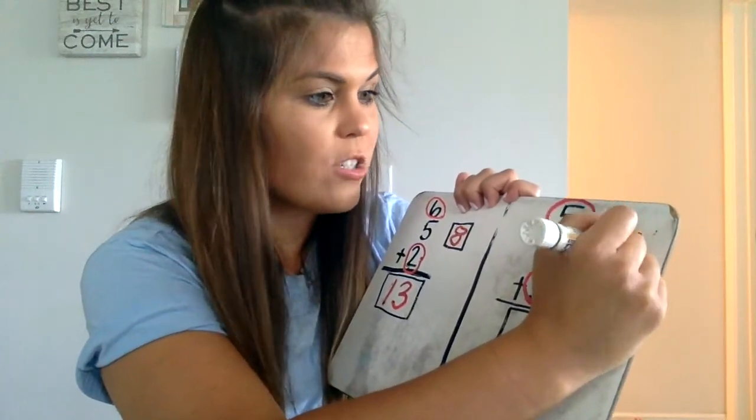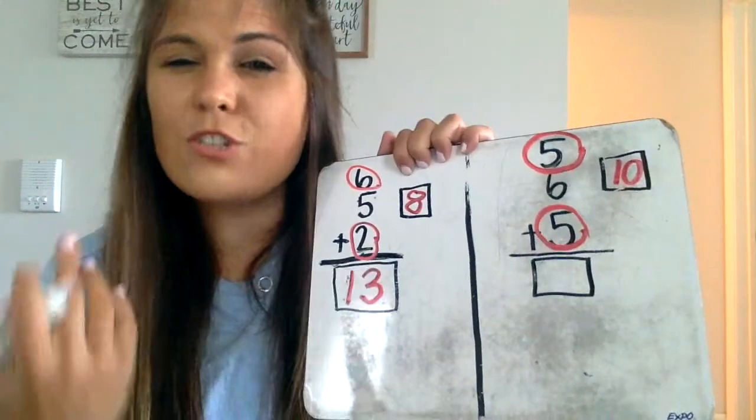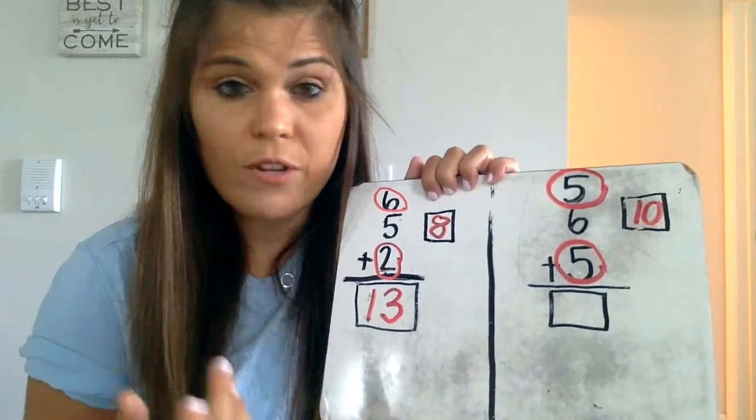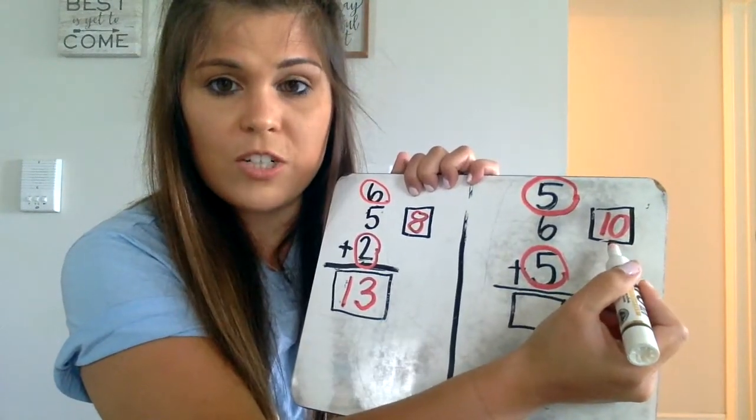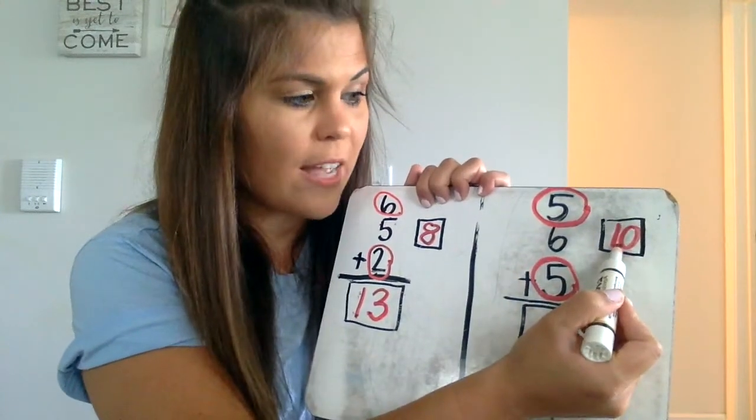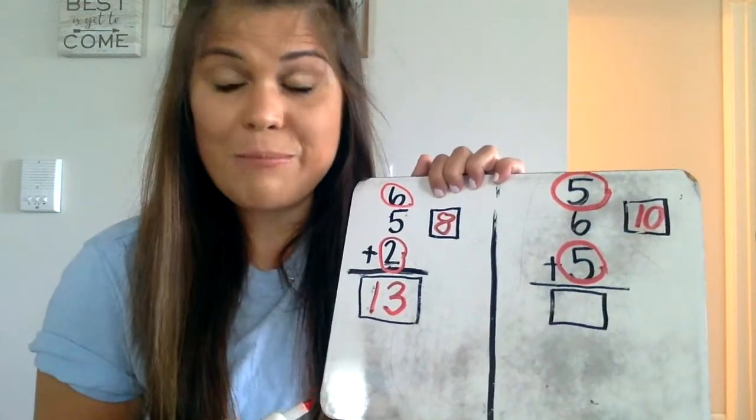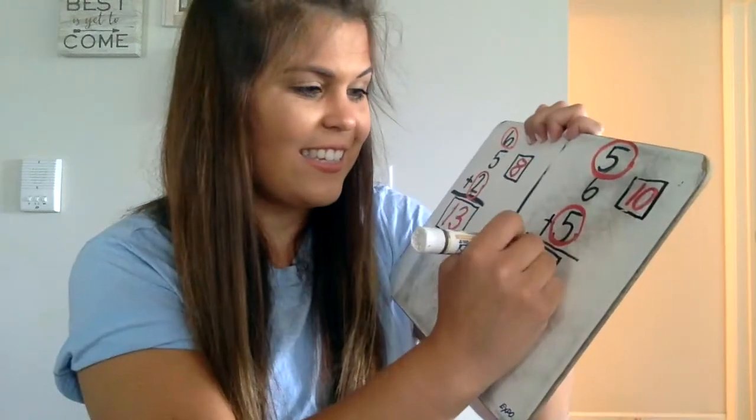...and any equation that has ten as an addend is usually pretty easy to solve. So, five plus five equals ten. I write that answer in the box over here, and now I could do ten plus six. Ten plus six equals sixteen.